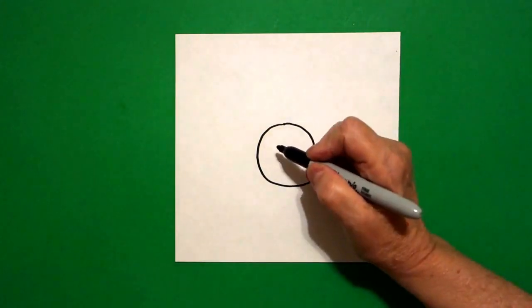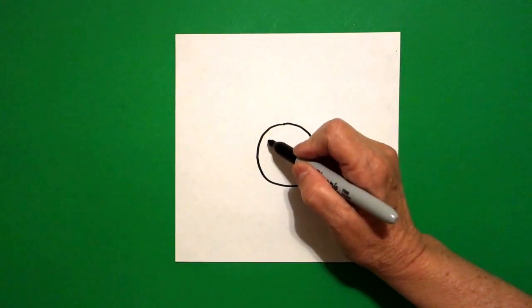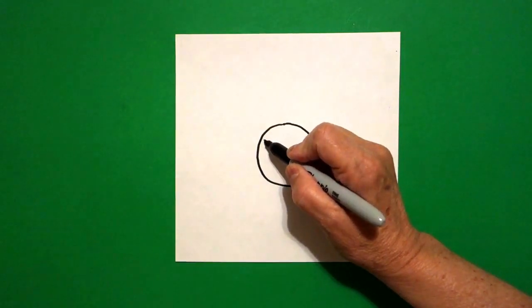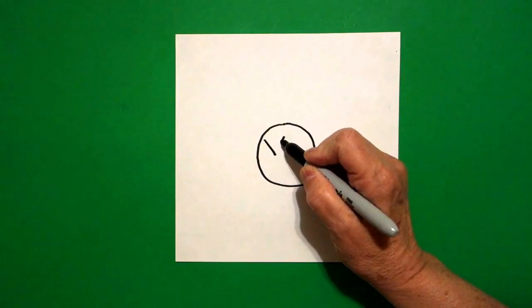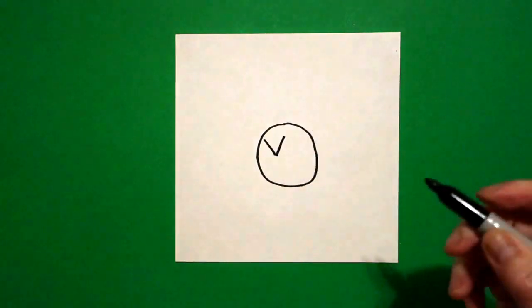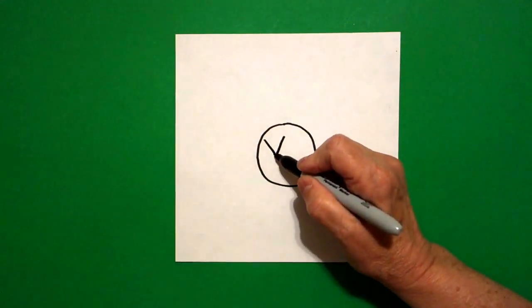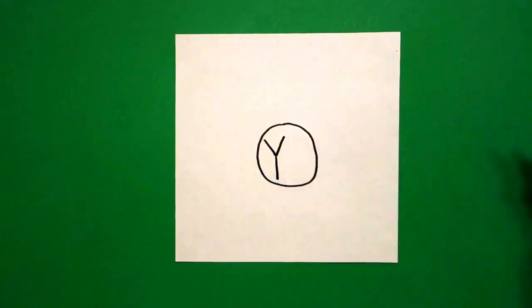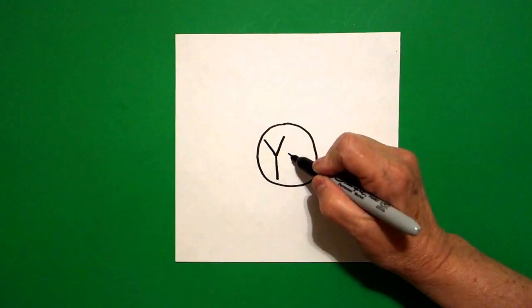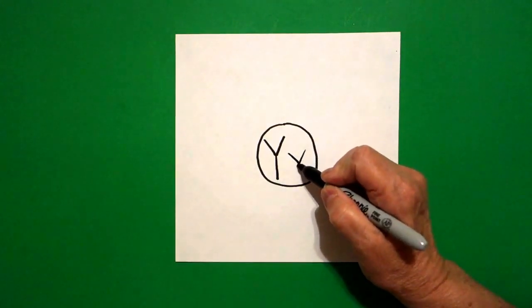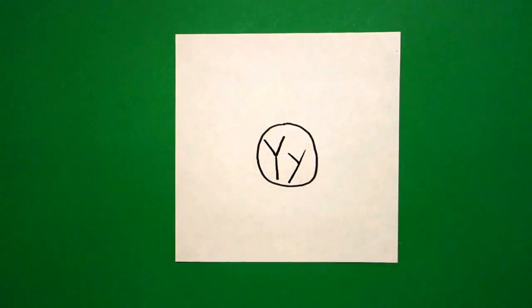Inside, I'm going to write an uppercase Y. I draw a straight diagonal down on the left, straight diagonal down on the right, straight line down. For the lowercase Y, straight diagonal in, big straight diagonal line down.